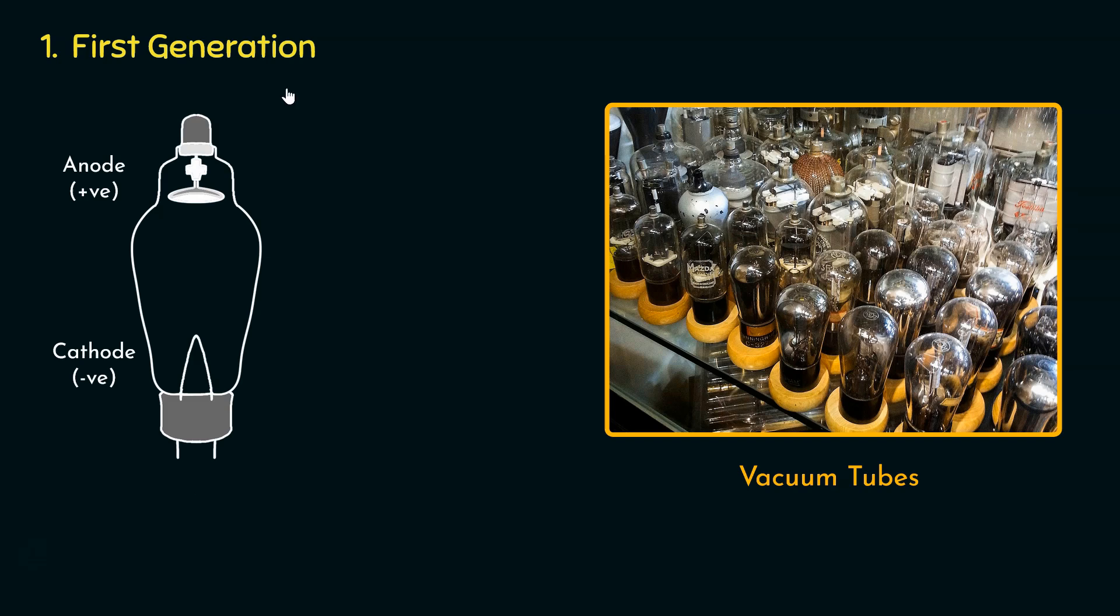In the first generation of computers, vacuum tubes were used as the single pole switch. Coming to single pole switch, it is a basic electrical switch used to control a light or device from a single location. It has two terminals, the cathode and the anode, and allows us to either connect or disconnect the circuit by flipping the switch.